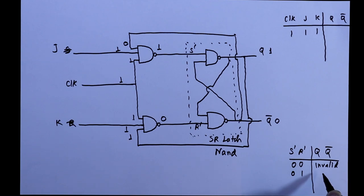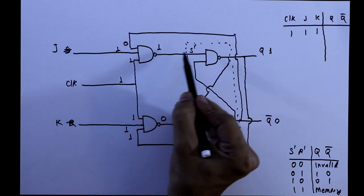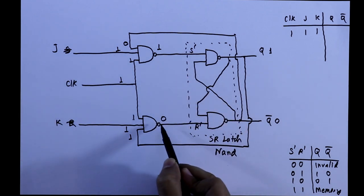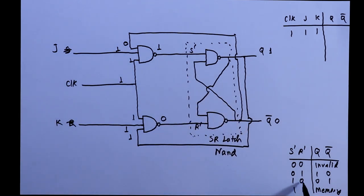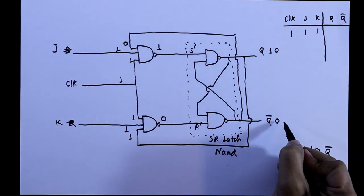Writing the truth table of SR latch. Now see here, as S is 1 and R is 0, S 1, R 0 means Q 0 and Q bar will be 1.